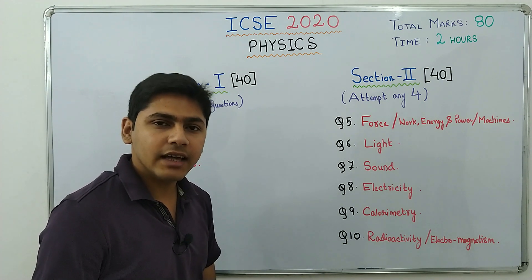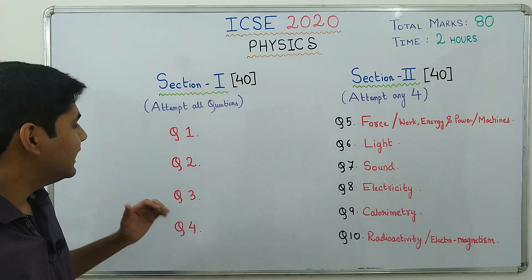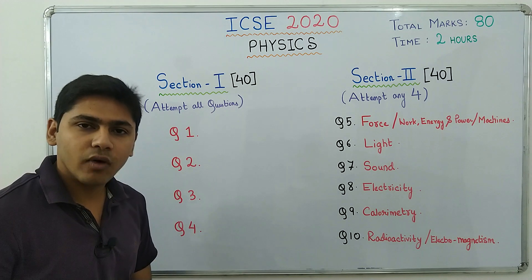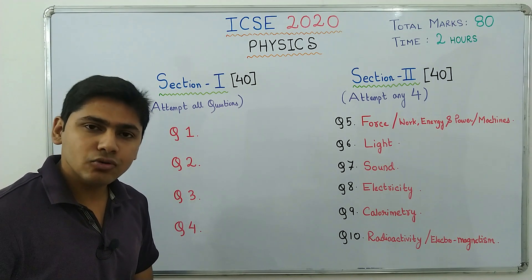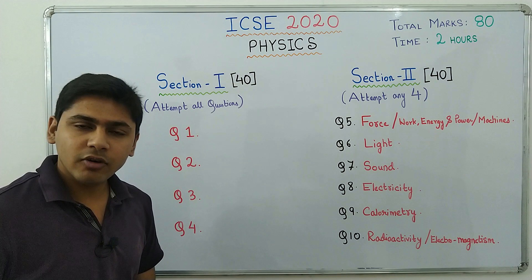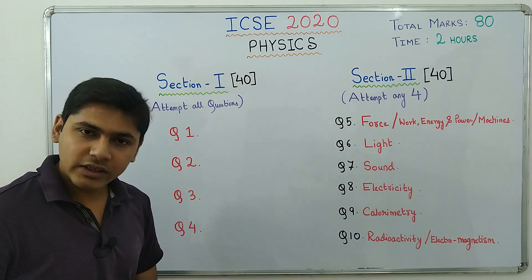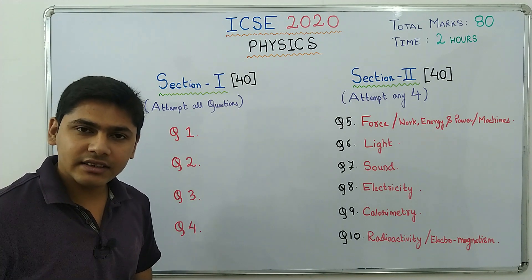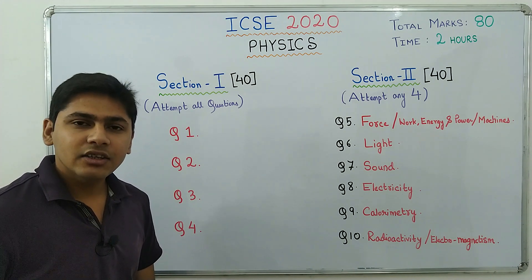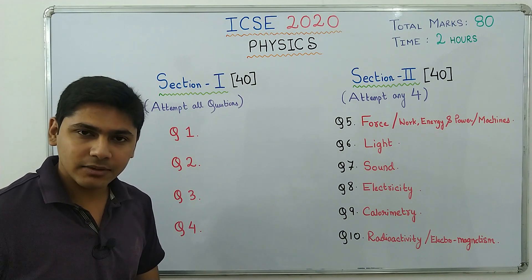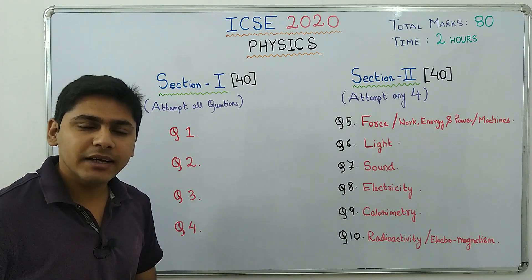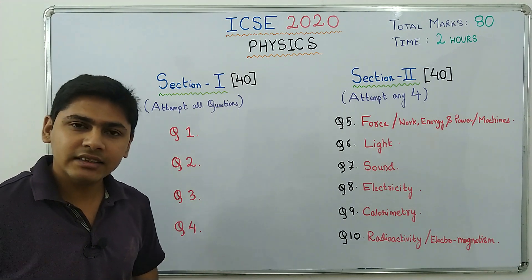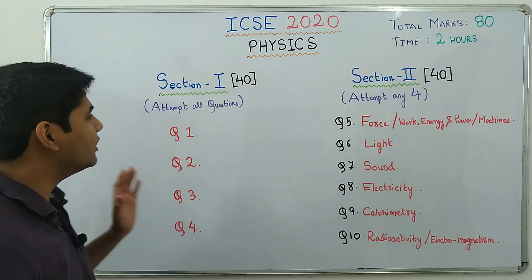Now, what type of questions are asked? In Section 1, questions will be of one or two marks — short questions. The types include: short answer type questions, simple definitions, SI units, one word answers, CGS units, short numericals, small diagrams, and a little bit of concept-based questions.